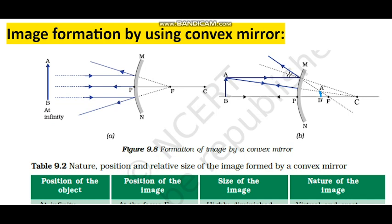The object AB is large and the image A'B' is small — a diminished image. Where is the image? Between the pole and the focus, behind the mirror. The image is virtual and erect — it cannot be formed on a screen, it is formed behind the mirror on the other side. The image is between pole and focus.